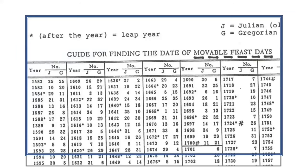Included with this lecture is a handout titled Guide for Finding the Date of Movable Feast Days, that helps you convert a movable feast date to a calendar date. The row highlighted in red gives the heading of the columns for the year of the Julian calendar and the Gregorian calendar. After the year 1700, the Julian calendar is not listed because both Catholics and Protestants are using the Gregorian calendar.